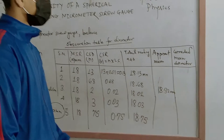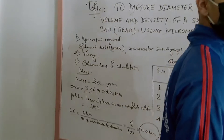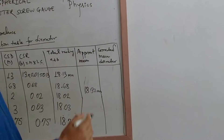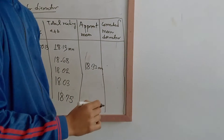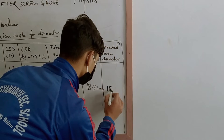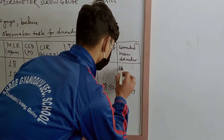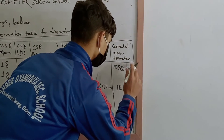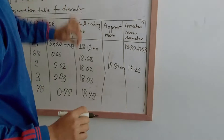Now the reference line is 0, so the positive zero error is always subtracted. The corrected diameter is 18.32 minus 0.03, which gives 18.29 mm.